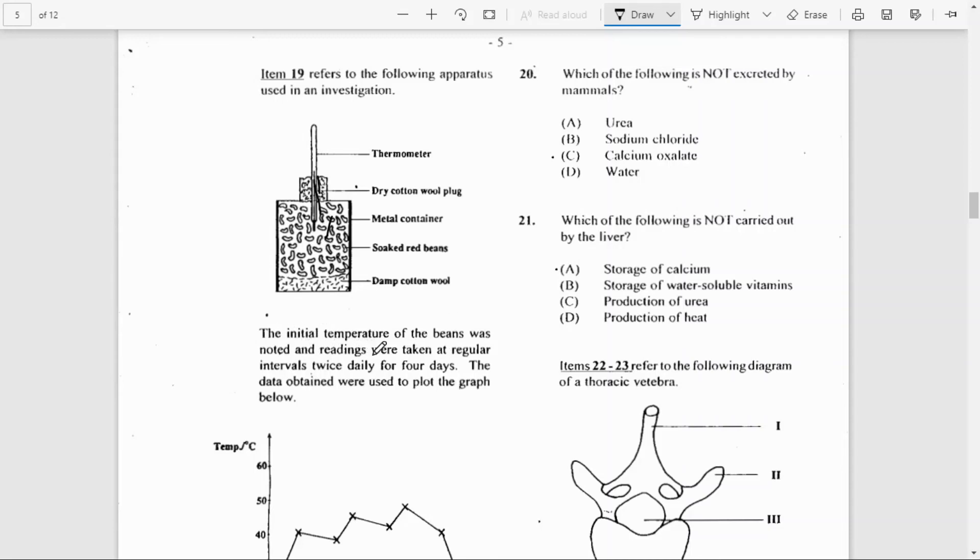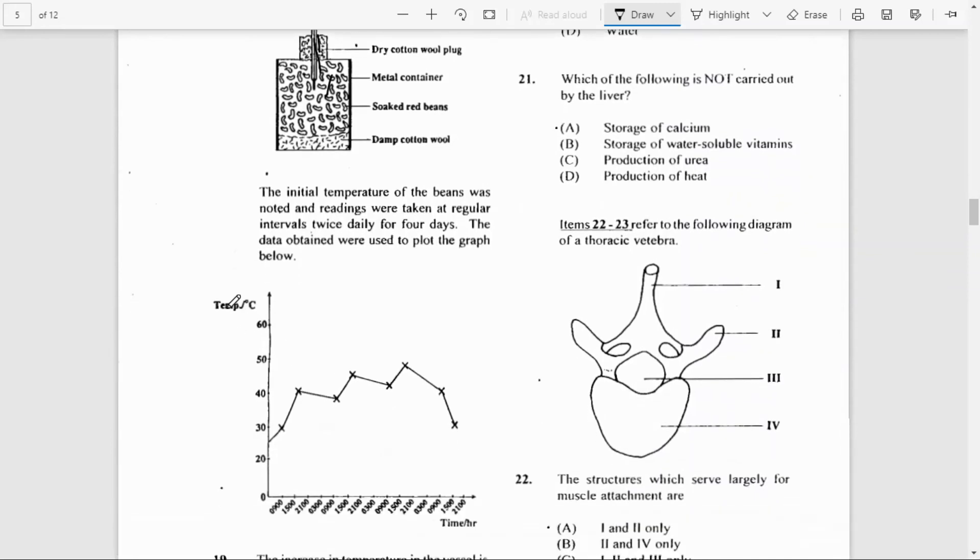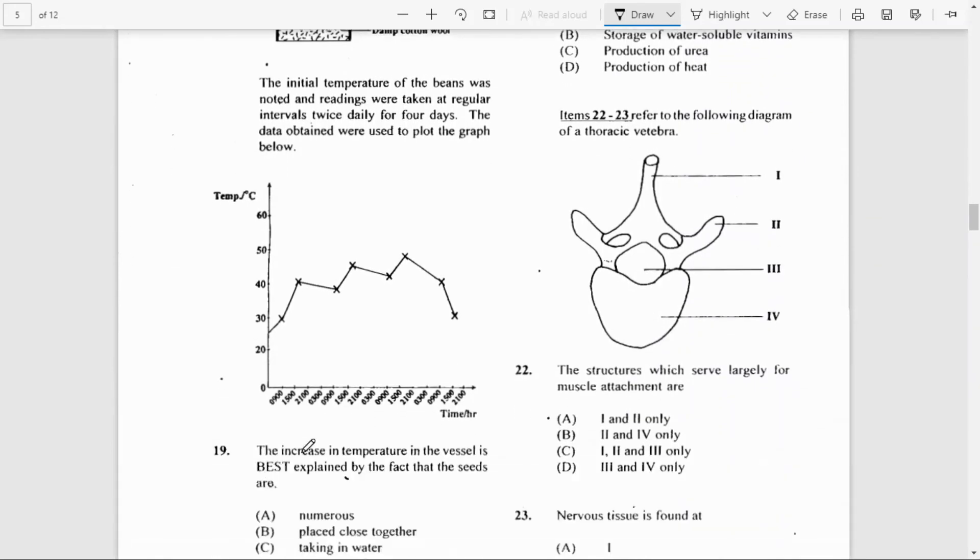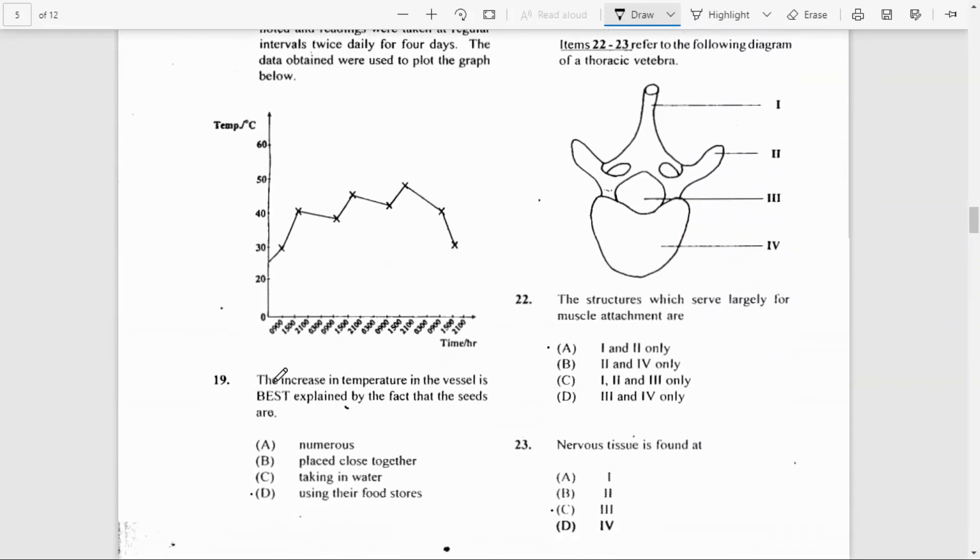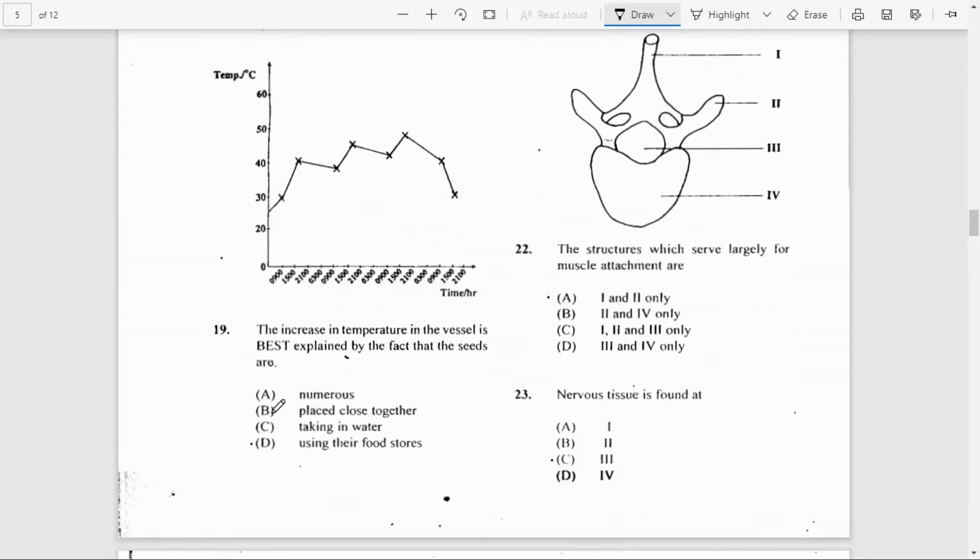The initial temperature of the beans was noted and readings were taken at regular intervals, twice daily for four days. The data obtained were used to plot the graph below. You have temperature in degrees Celsius on the y-axis and time in hours on the x-axis. Number 19: The increasing temperature in the vessel is best explained by the fact that the seeds are using the food stores.